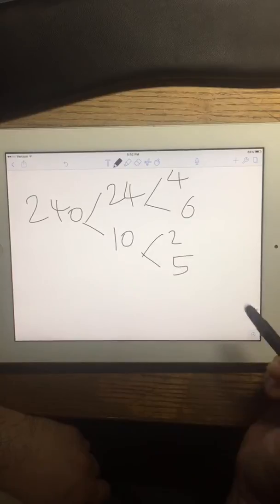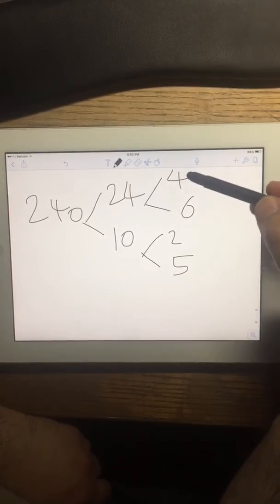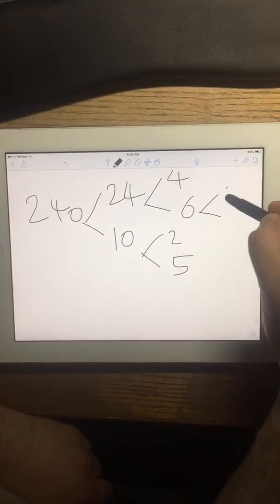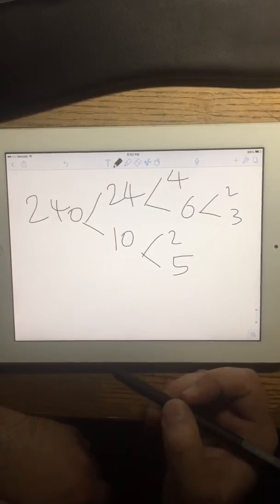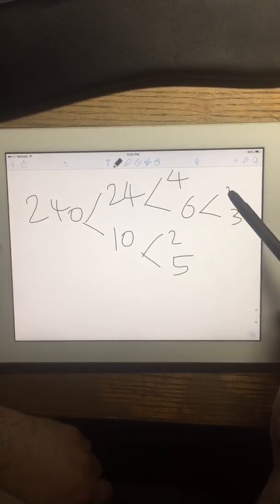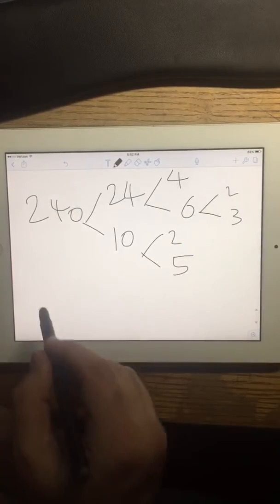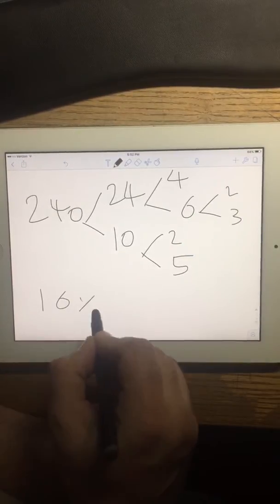And breaking down the factors, you have 2, 2, 2, so 4, which gives you 16 times 15.